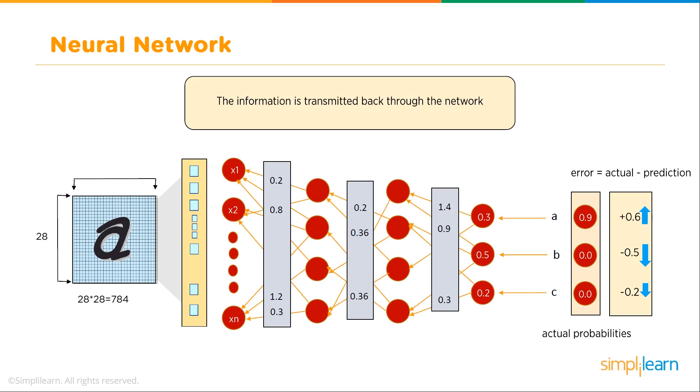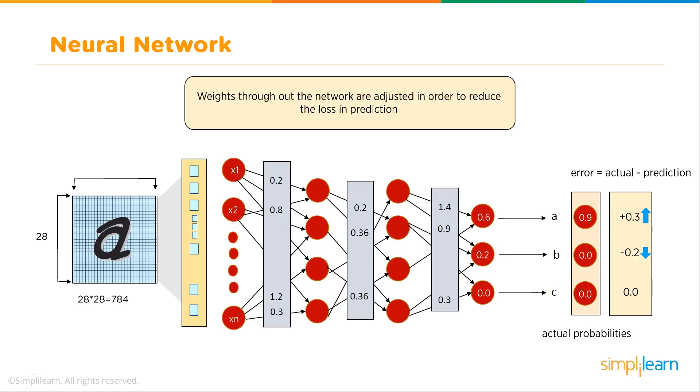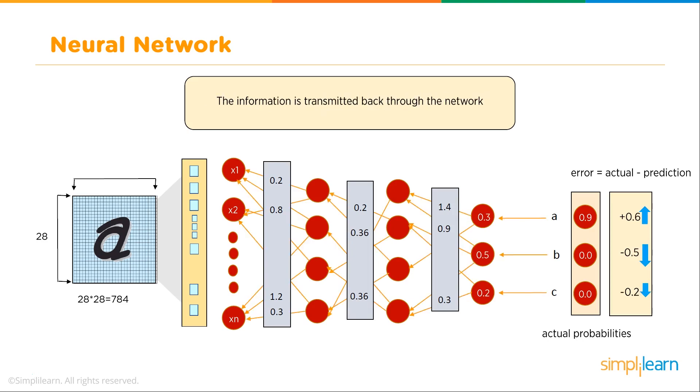The magnitude indicates the amount of change while the sign indicates an increase or decrease in the weights. The information is transmitted back through the network. Here comes our back propagation.